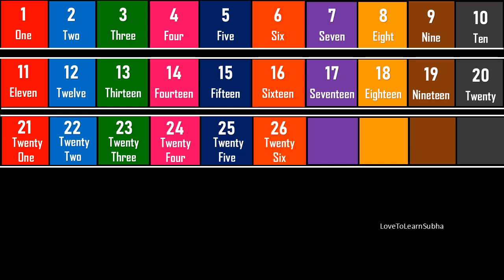26 - TWENTY (20) - S, I, X (6) - 26. 27 - TWENTY (20) - S, E, V, E, N (7) - 27. 28 - TWENTY (20) - E, I, G, H, T (8) - 28. 29 - TWENTY (20) - T, W, E, N, T, Y (20) - NINE (9) - 29.